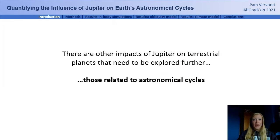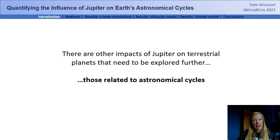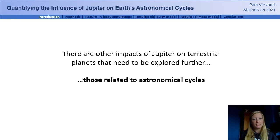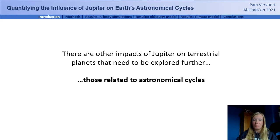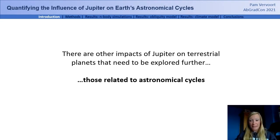As we weigh the advantages against the disadvantages of having a giant companion, we should also consider another important implication of the presence of a giant planet in a planetary system: the gravitational impact on the smaller planets and how it can alter their orbits and indirectly also their spin dynamics.